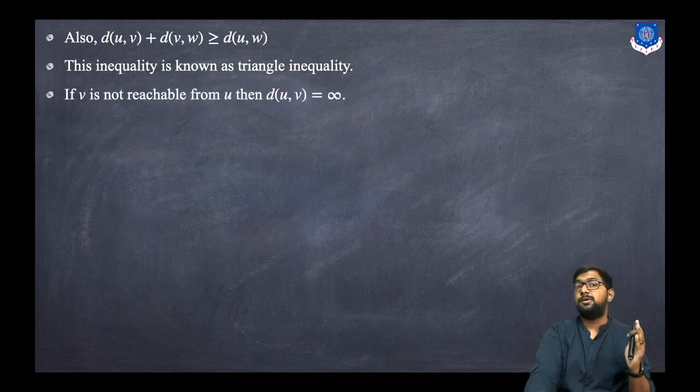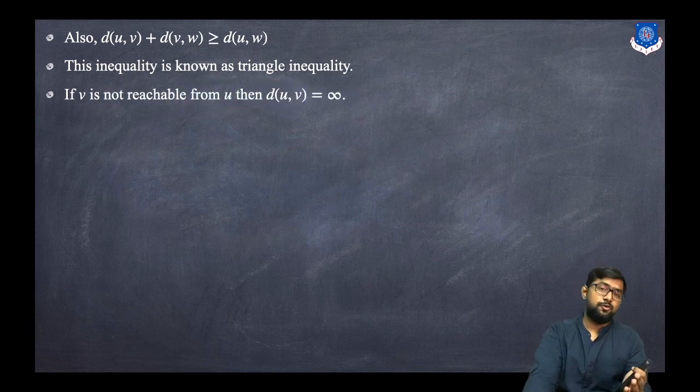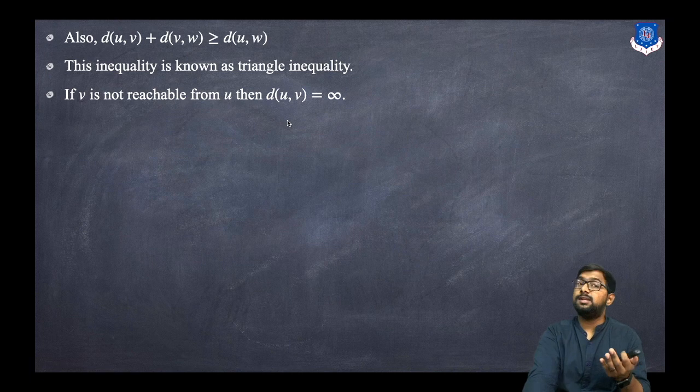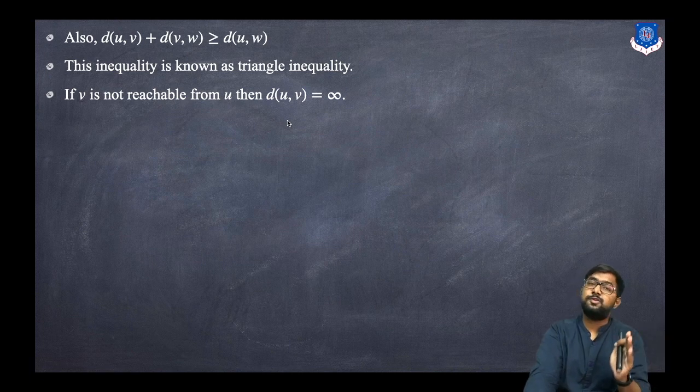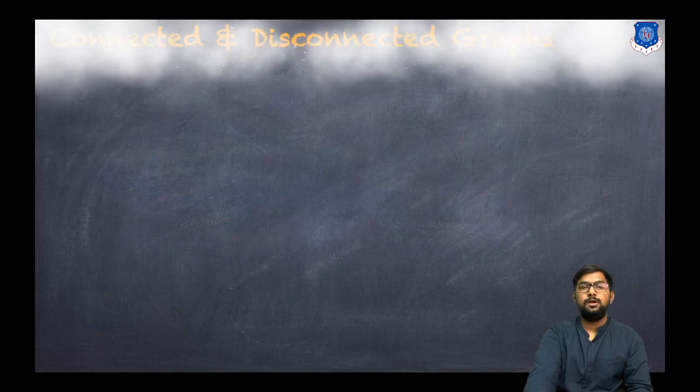Now, if V is not reachable from U, then the distance d(U, V) is infinite.